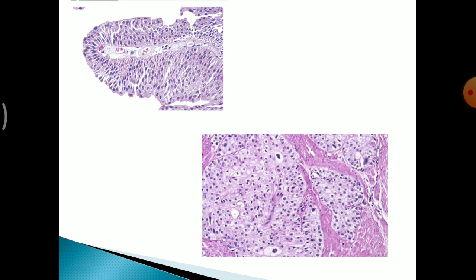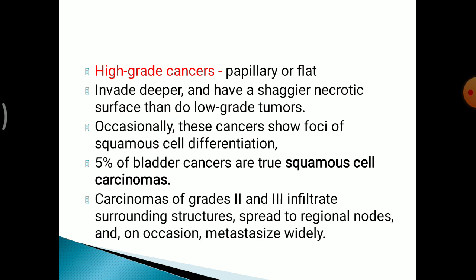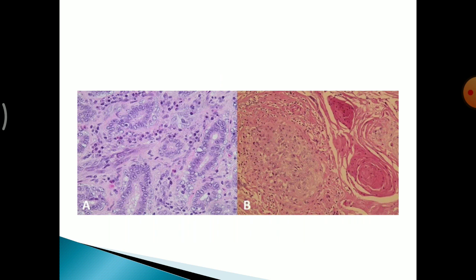H&E microphotographs show the transitional urothelium lining the fibrovascular core, while increased nuclear atypia indicates a higher grade of urothelial carcinoma. High-grade cancers can be papillary or flat, invade deeper and have a necrotic surface, occasionally showing foci of squamous cell differentiation. True squamous cell carcinomas are also seen in 5% of bladder tumours. Grade 2 and 3 carcinomas infiltrate surrounding structures and can spread to regional lymph nodes and metastasise widely. An H&E photograph shows squamoid differentiation with squamous pearl formation within the urothelial carcinoma.